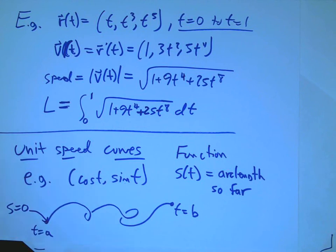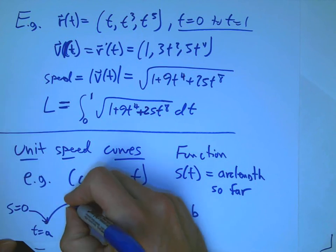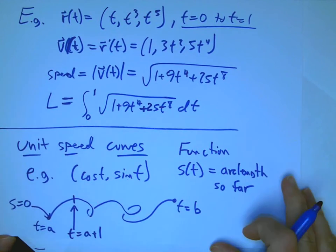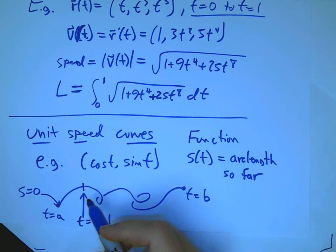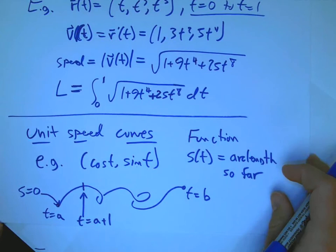If I start out at t equals a, I'm just going to put a little marker here. I'm going to say, well, that's where s equals zero, because I haven't gone anywhere. Let's say here I've gone one unit in t. I've let the clock run by one unit. t equals a plus one. Can you see that? Okay.